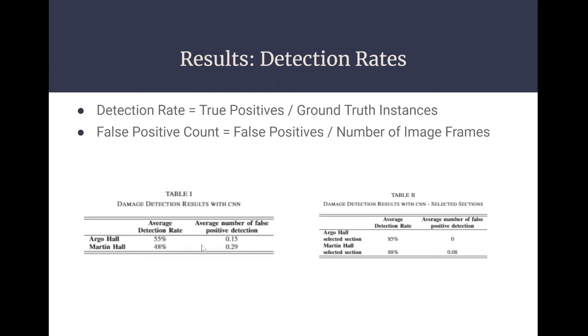Over here in these two tables, we can see the results of the average detection rate of the damages in the Argo Hall building and the Martin Hall building, and we can see pretty close to 50% throughout the entire video. And on the second table, as we can observe, we have an average detection rate of 85% for Argo Hall and 88% for Martin Hall, and that's just for a specific selected section. So you can conclude that according to the results, the proposed CNN-based detection algorithm successfully detects roof damages and identifies its location in the camera frame.